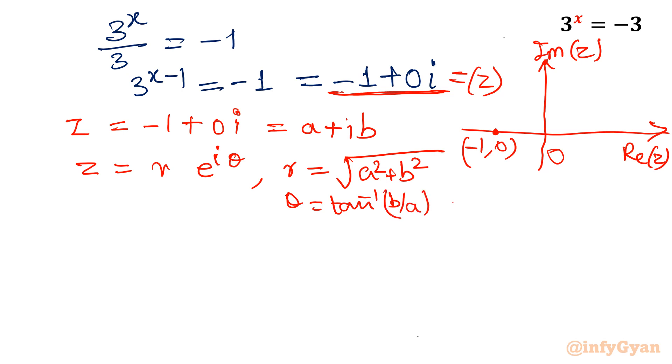Where r is square root of real part square plus imaginary part square, and theta is tan inverse imaginary part over real part. So let's apply because we have our z: that is a equal to minus 1 and b equal to 0. Let's put here the values. So r will be under the root: negative 1 square plus 0 square. That value will come out - negative 1 square is 1, 1 plus 0 is 1, square root 1 is 1. This is radius of unit circle.